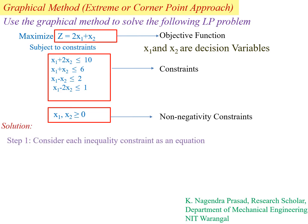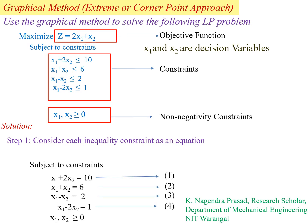Let's see the solution. The first step is to consider the inequality constraints as equations. For this, we have to replace the inequality symbol with an equality symbol. Then our constraint equations are: x1 plus 2x2 equal to 10 — equation 1; x1 plus x2 equal to 6 — equation 2; x1 minus x2 equal to 2 — equation 3; x1 minus 2x2 equal to 1 — equation 4; and x1, x2 greater than or equal to 0.